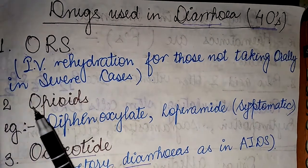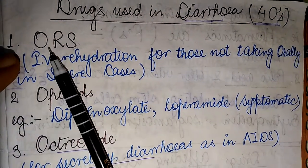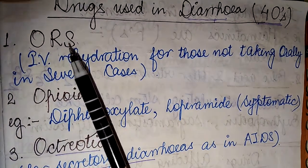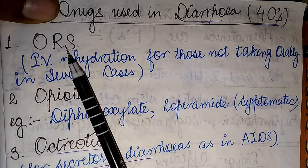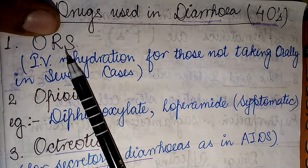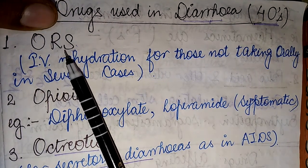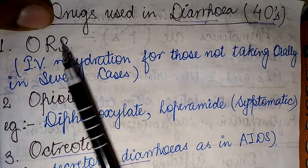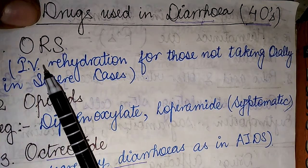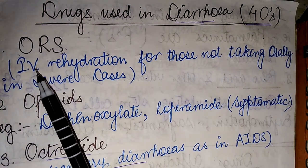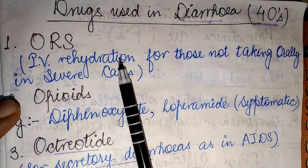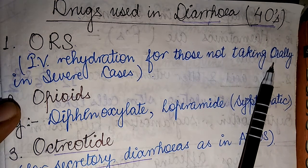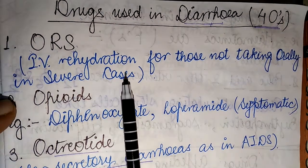The first O stands for ORS, that is the oral rehydration solution. This is the first drug of choice given in the treatment of diarrhea. In case oral rehydration is not possible, we go for intravenous rehydration for patients who are unable to take the solution orally — that is in severe cases.